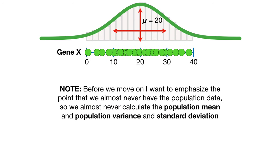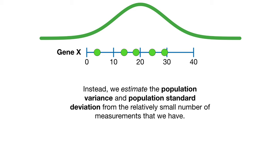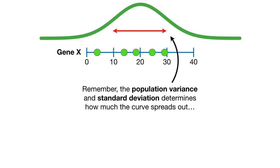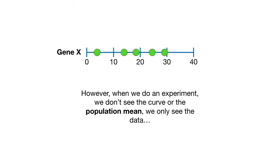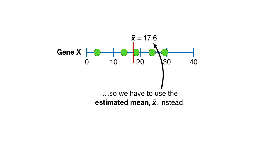Note, before we move on, I want to emphasize the point that we almost never have the population data, so we almost never calculate the population mean and population variance and standard deviation. Instead, we estimate the population variance and population standard deviation from the relatively small number of measurements that we have. Remember, the population variance and standard deviation determines how much the curve spreads out. And that means the estimated variance and the estimated standard deviation should reflect how the data are spread around the population mean. However, when we do an experiment, we don't see the curve or the population mean — we only see the data. So we have to use the estimated mean, x-bar, instead.